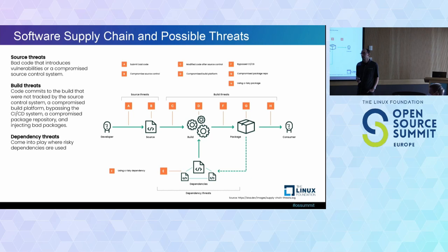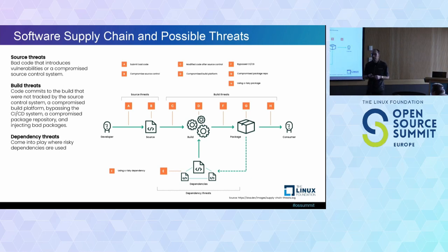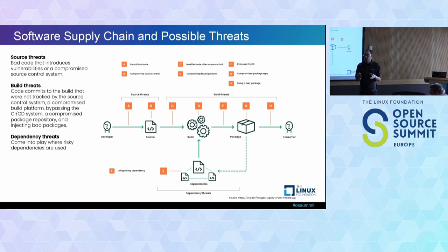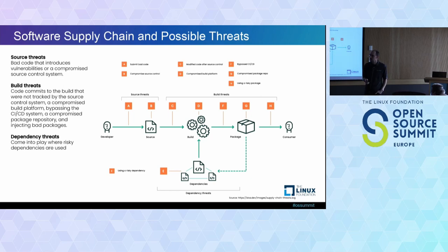The simple answer is: you need to make sure that the source where you're getting your software from is secure. That can mean multiple things — ideally you have a trusted vendor who provides packages and does audits, or you have your own team doing audits on the packages you consume. You need a process in place to make sure no third party is interfering with the code you're actually consuming. The presentation will answer more of these questions.